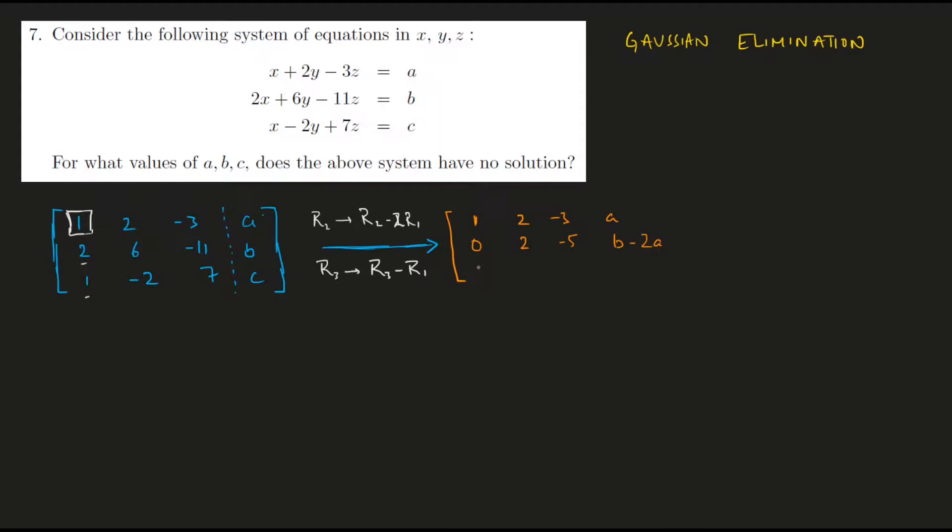Similarly for the third row we would have 1 minus 1 that is 0, minus 2 minus 2 is minus 4, 7 plus 3 should be 10, and this is just C minus A.